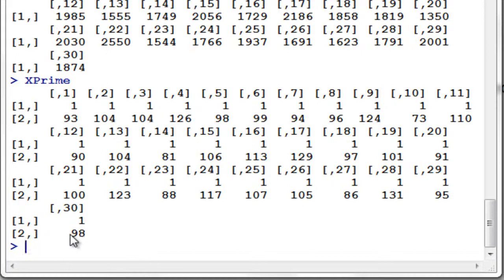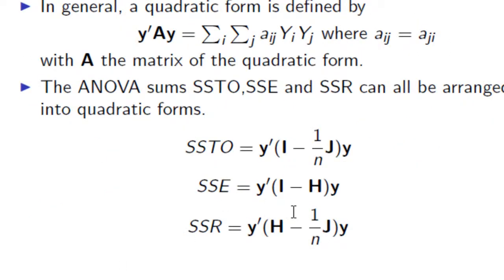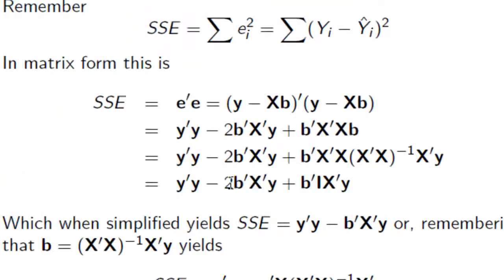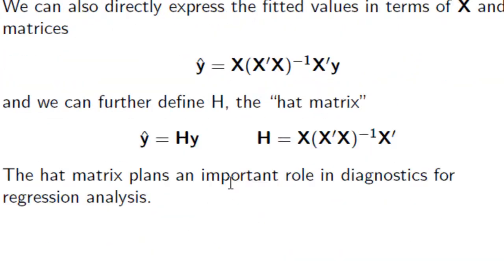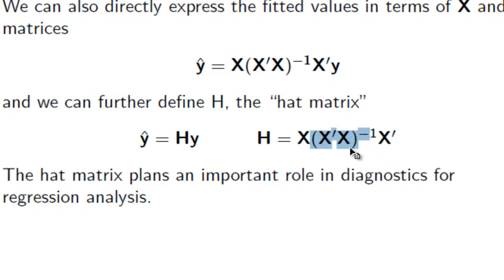Since we already have our X prime and Y prime, let's go and take a look at our formula again. What is the formula of our H? Let's scroll up. This is the formula of our H. We have our X already and our X prime, and this time we are going to solve for this part first and find the value of it, and then we can solve for our H.